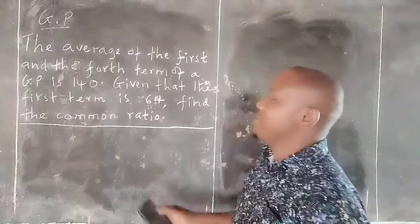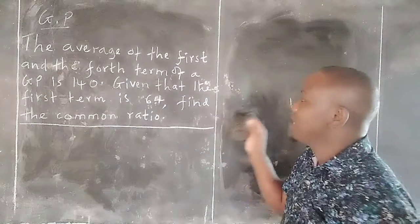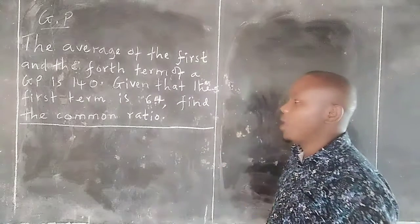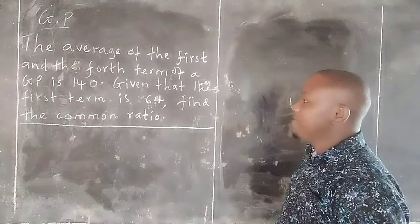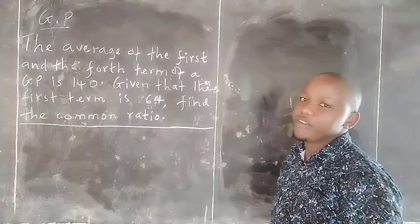Here we are given a question which talks of the average of the first and the fourth terms of a GP is 140. Then we are told given that the first term is 64, find the common ratio.